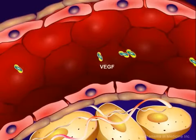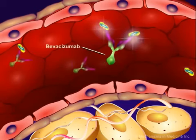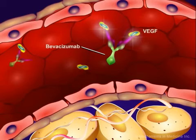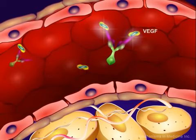Ligands can be neutralized before they bind to the receptors. An example of this is Bevacizumab, or Avastin, which is a humanized monoclonal antibody that targets circulating vascular endothelial growth factor, or VEGF. Platelet-derived growth factor, or PDGF, and fibroblast growth factor, or FGF, are other examples of ligands that can be targeted for different cells in the body.